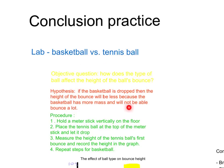Here is our hypothesis — this is the hypothesis that was on your handout. If the basketball is dropped, then the height of the bounce will be less because the basketball has more mass and will not be able to bounce a lot. This is good because it has the 'if,' the 'then,' and the 'because.' Also, this hypothesis is pretty good because we've actually chosen what we believe will be the ball to bounce the least amount.